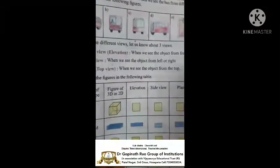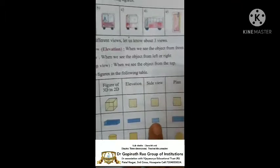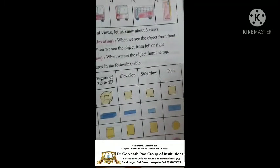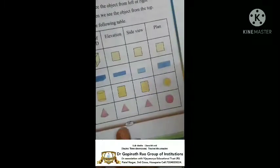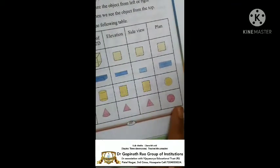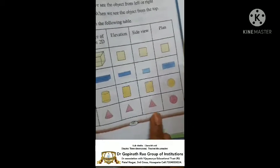Next one: cuboid. Cuboid also — elevation means front view, side view, top view. Cylinder also: front view, side view, top view. Cone: front view, side view, top view. These are all the elevation of front, side, and plane views — these are all very important, children.